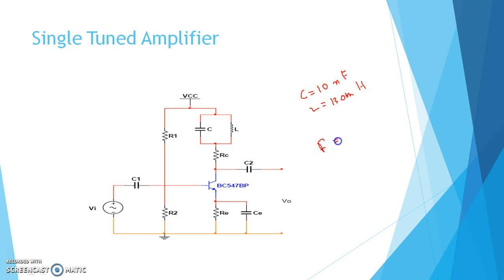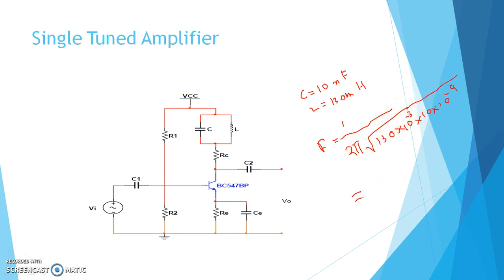At what frequency should the gain be maximum? F = 1/(2π√(130×10⁻³ × 10×10⁻⁹)). Let us solve this by calculator: 130×10⁻³ × 10×10⁻⁹ = 1.3×10⁻⁹. Root of 1.3×10⁻⁹ is 3.6×10⁻⁵. Multiplied by 2π (2×3.14) gives 2.26×10⁻⁴. Then 1 divided by 2.26×10⁻⁴ equals 4,416. So this frequency is basically 4,416 Hz.